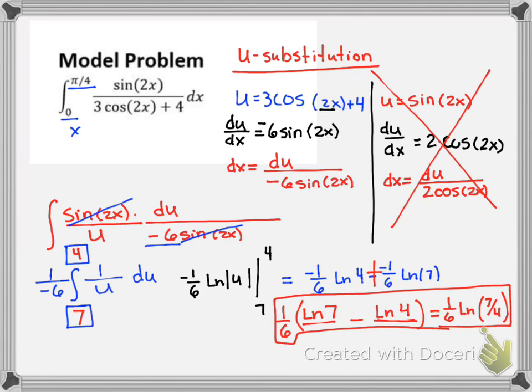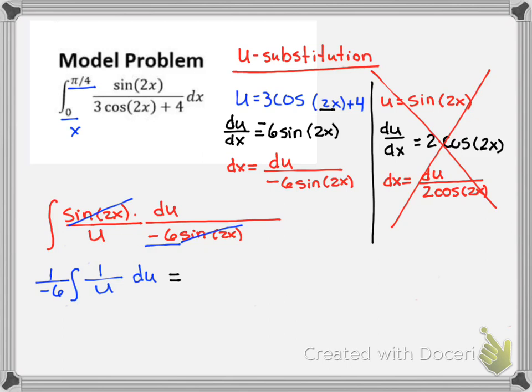Now let's go back a step and pretend that we didn't use everything in terms of u. We're going to leave this an indefinite integral for now. We know the integral of 1 over u will be ln of the absolute value of u, negative 1/6 of that.